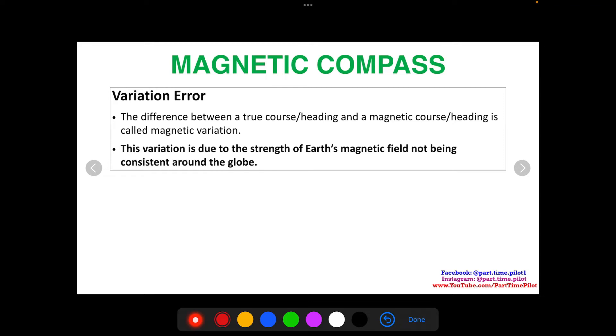So this variation is due to the strength of Earth's magnetic field not being consistent around the globe. So whether you're in, let's say, San Diego or New York City, the pull of Earth's magnetic field on your compass is going to be completely different. And that's what variation is. It's the variation of the magnetic field.